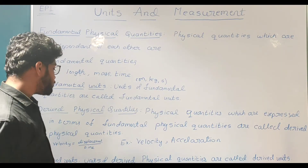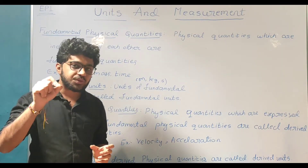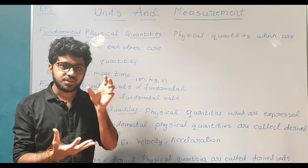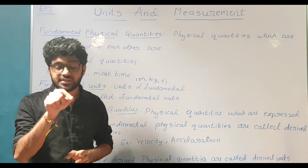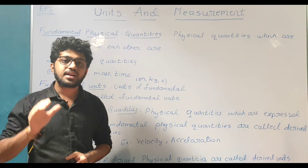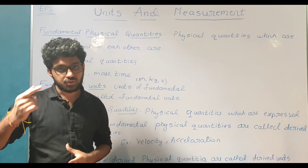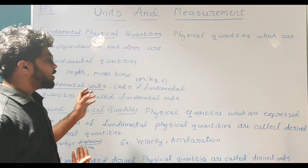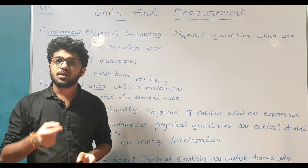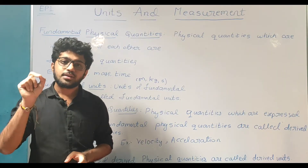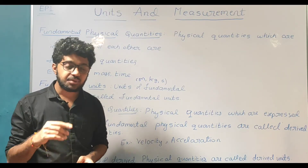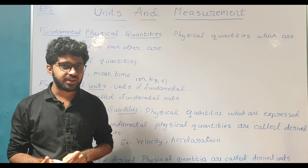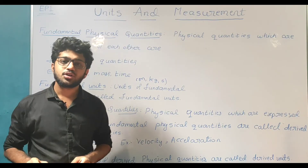Next, derived units. Units of derived physical quantities are called derived units. More precisely, units which are expressed in terms of fundamental units are called derived units — that is, units which are derived from or which can be expressed in terms of fundamental units are called derived units.